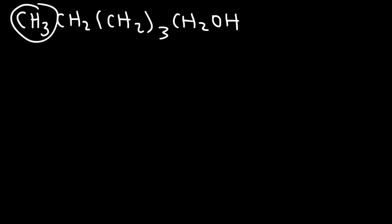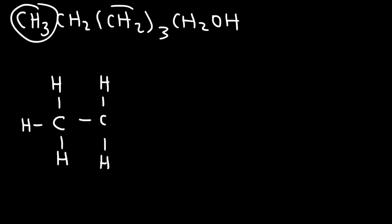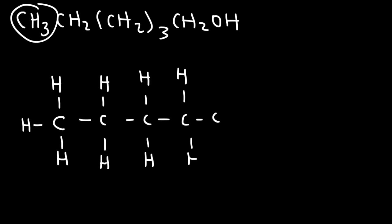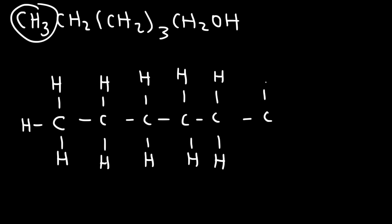Let's start with the carbon on the left. That carbon has three hydrogens attached to it. Next, it's attached to a CH2 group — a carbon with two hydrogens — and then we have three CH2 groups. So that's going to be three carbons, all connected to each other, each with two hydrogen atoms. And then we have another CH2 group with an OH at the end.